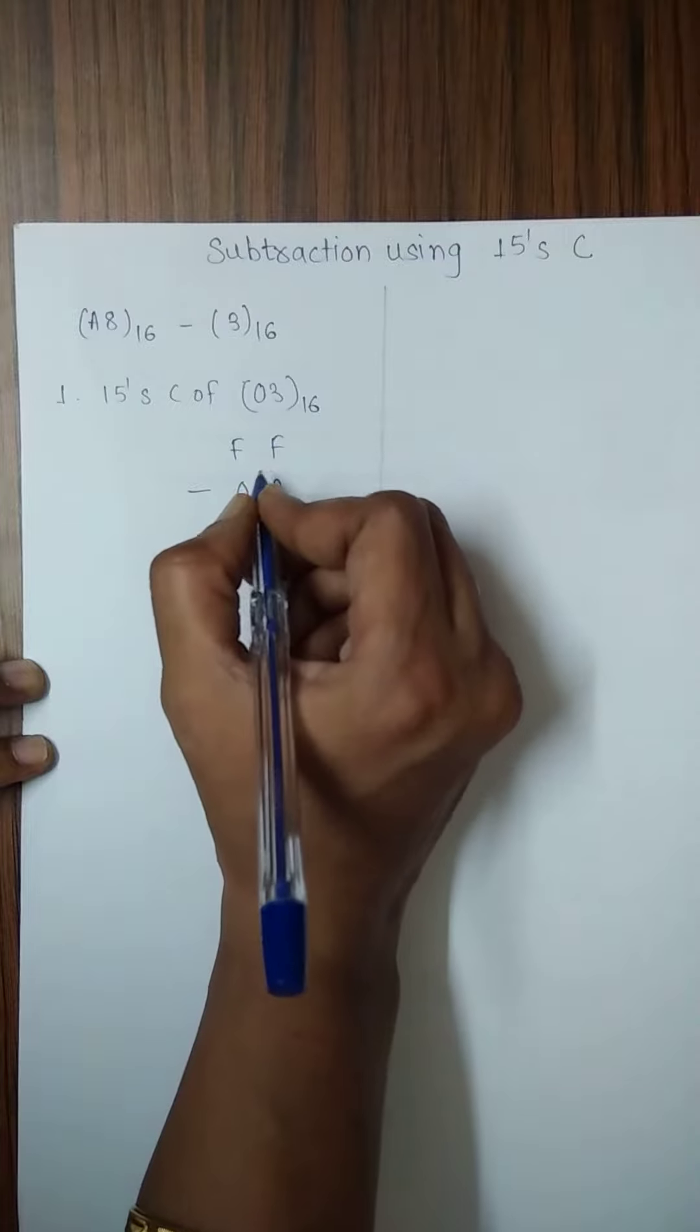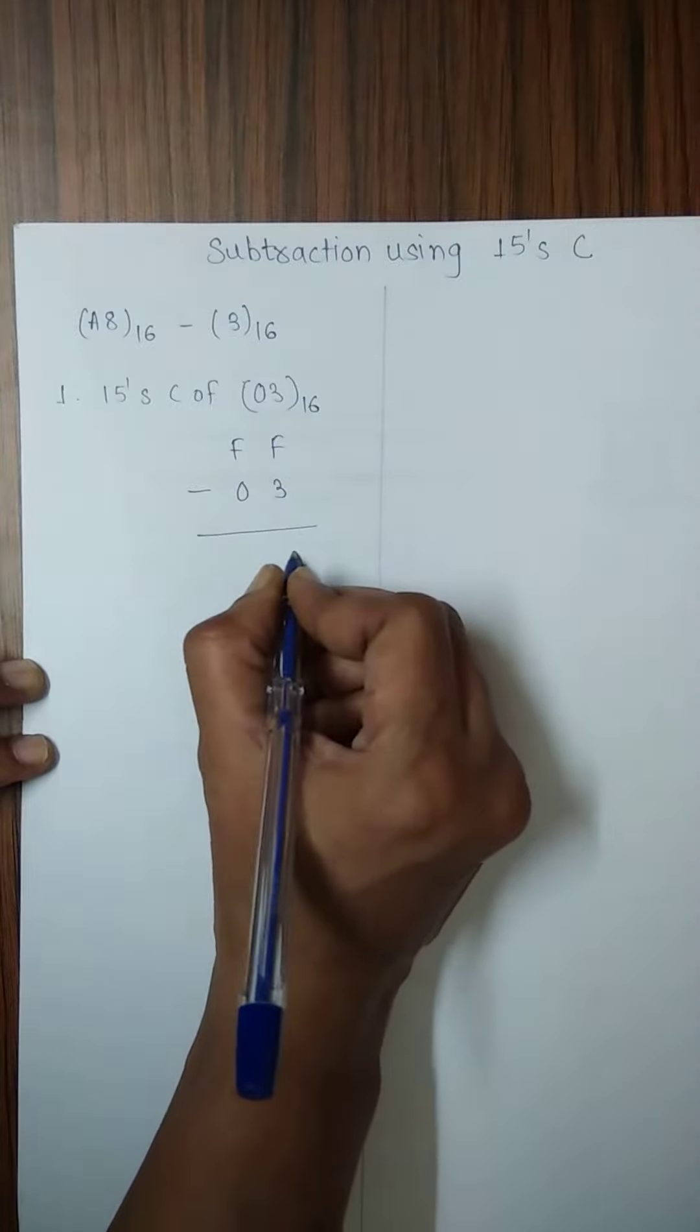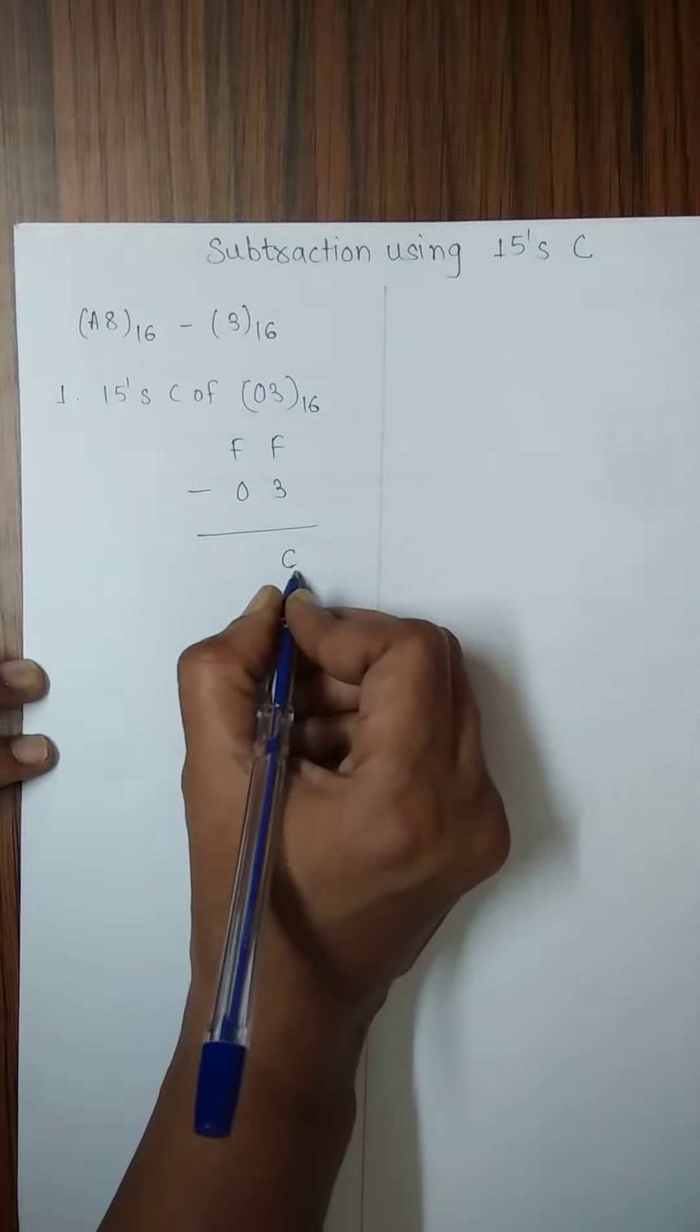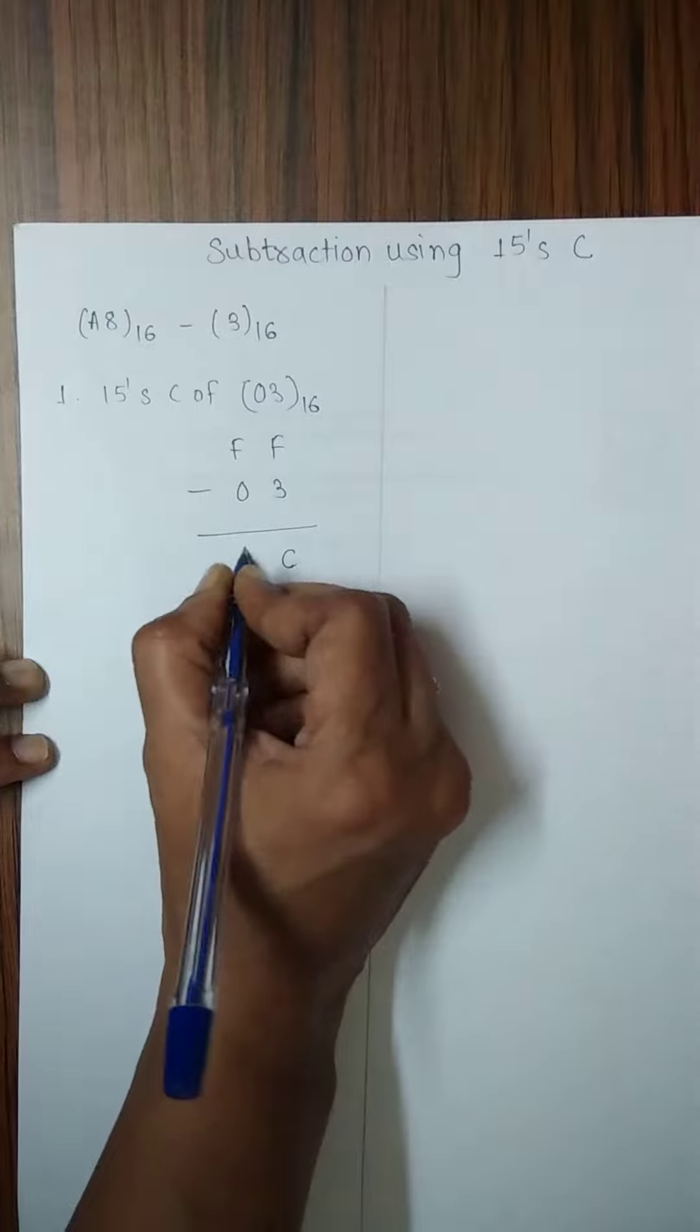Since 03 is 2 digits long, 15 is used twice. 15 minus 3 is 12 representing character C which is written here. F minus 0, 15 minus 0 is 15.